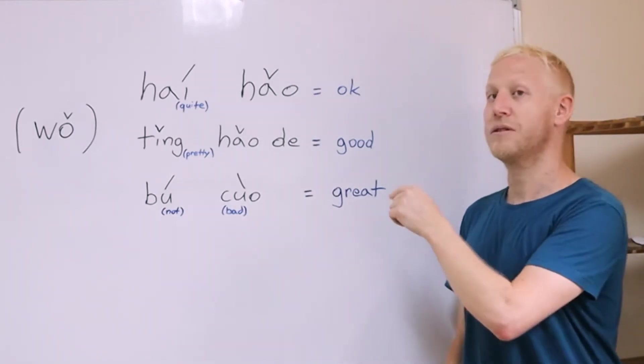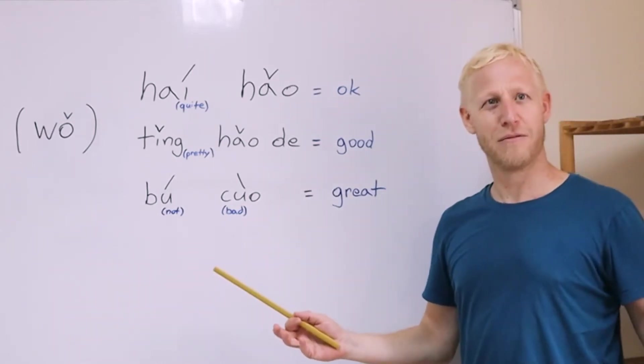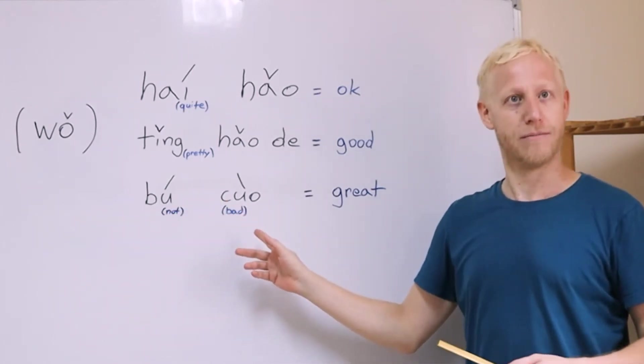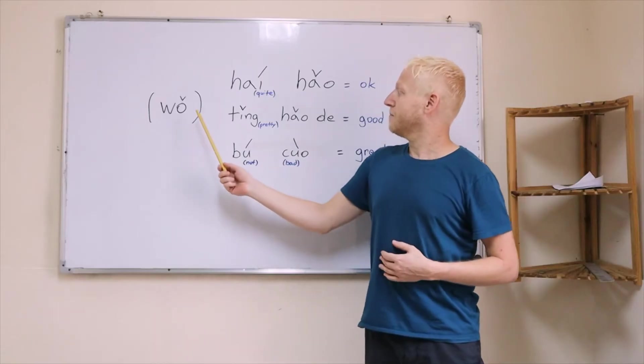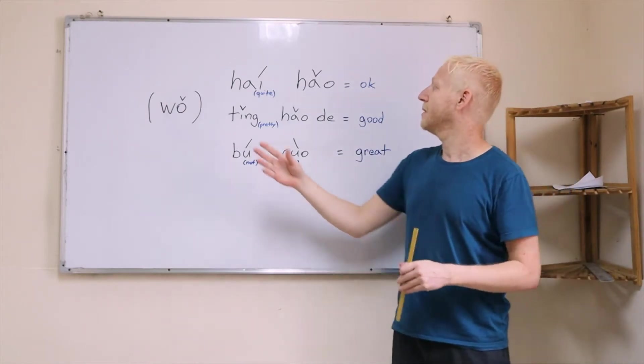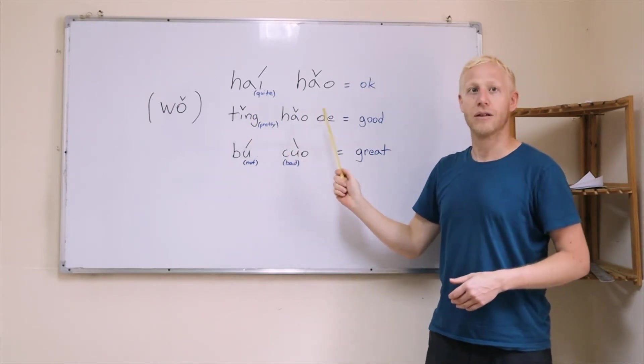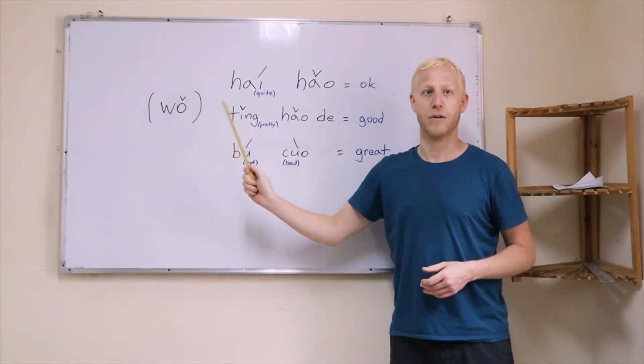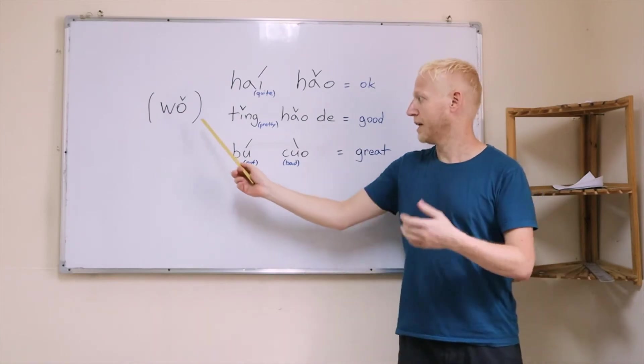So if you just want to say okay you would say 还好. If you want to say good you would say 挺好的. And the last one, it's a bit confusing because the literal meaning is not bad. 不错. But actually when you say not bad in Chinese it means great. You can add the 我 at the beginning to mean I. 我还好, 我挺好的, 我不错. Or you can also say it without the 我.